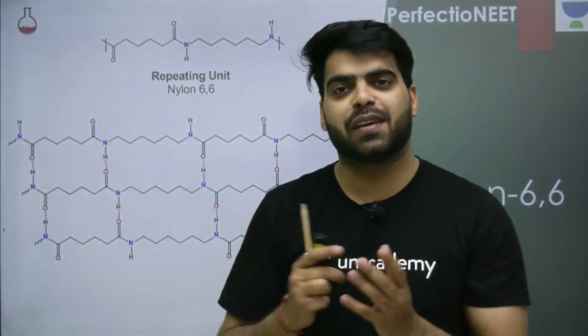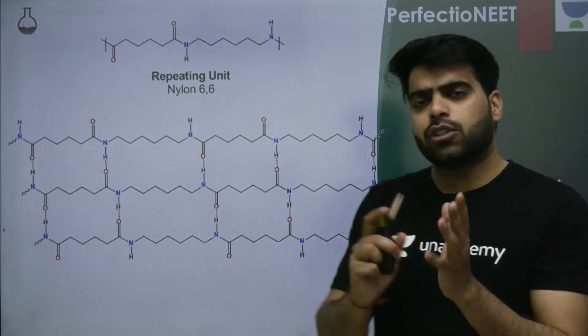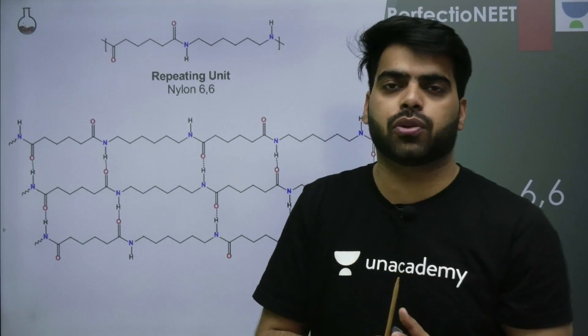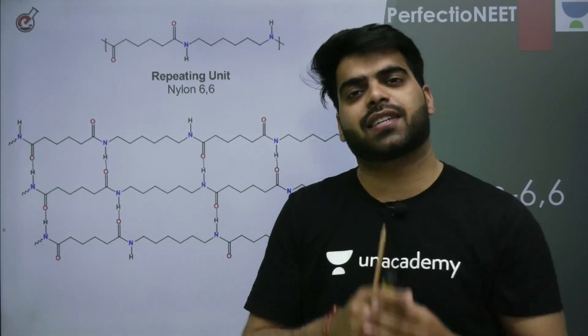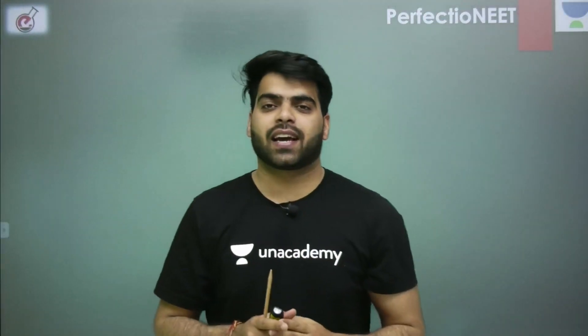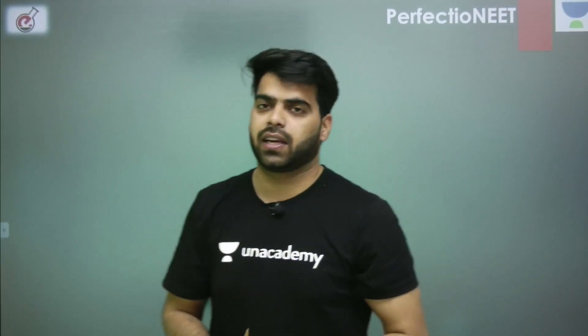Now we are going to talk about a very simple polymer we have in day-to-day life — nylon 6,6. This is its tensile strength. Let's see what two reagents it is made from, what type of reaction it gives, and what is the reason behind its high tensile strength.